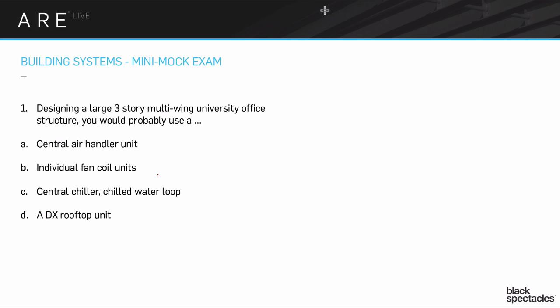So let's get started. All right, there we go. So the first one is a question that's going to be about what kind of system is likely to be chosen for a specific kind of scenario. We're going to have a couple of those questions along the way here. So the first one says, designing a large three-story multi-wing university office structure, you would probably use: A) central air handling unit, B) individual fan coil units, C) central chiller chilled water loop, or D) a DX rooftop unit.